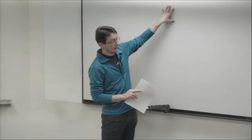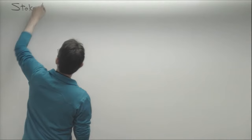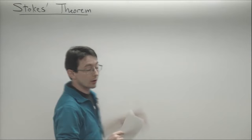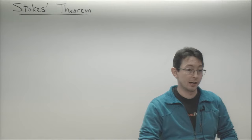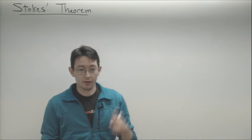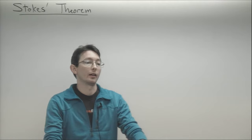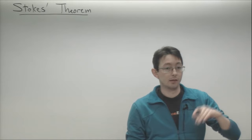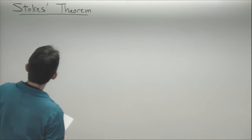We talked about Gauss's divergence theorem already, which was super powerful. Gauss's theorem allowed us to write surface integrals of flux through a surface as volume integrals of the divergence in the volume. Today we're going to be talking about Stokes' theorem, which is probably the most powerful of all these vector calculus identities, with lots of ramifications. I'll assume you all know how to integrate functions along paths, surfaces, and volumes.